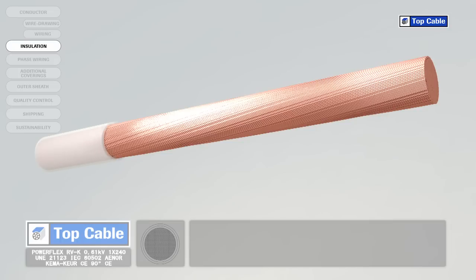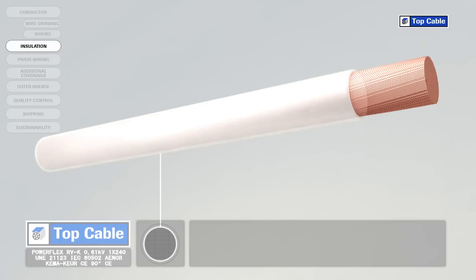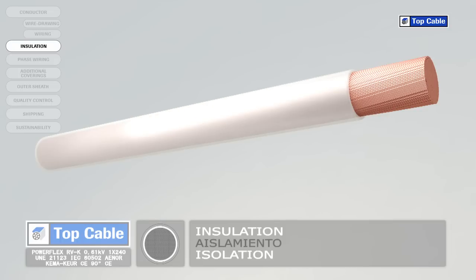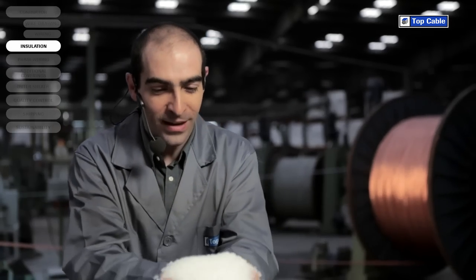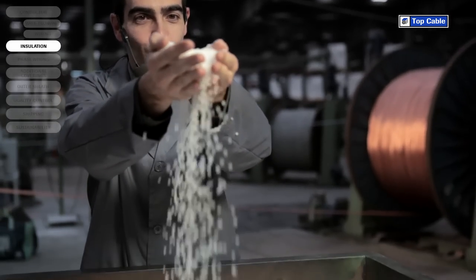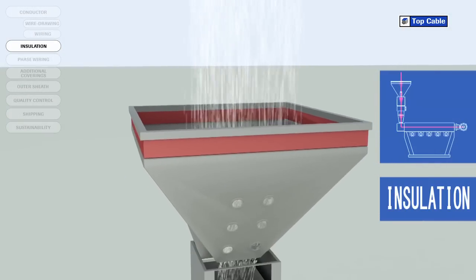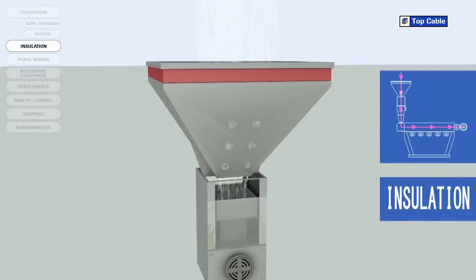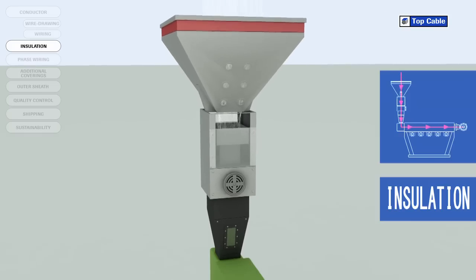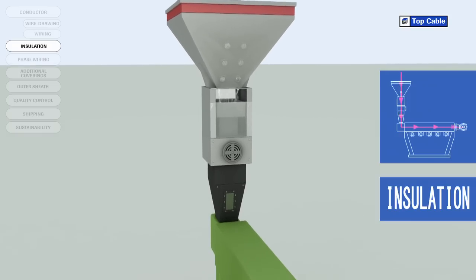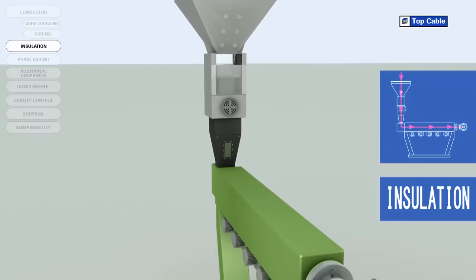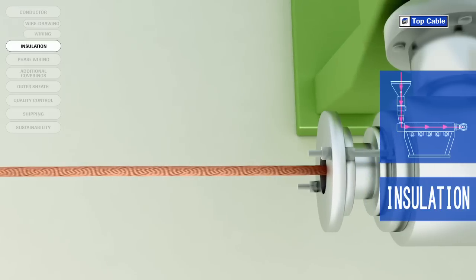The next process in the manufacture of electrical cables is the insulation. This is when we place an insulating cover over the conductor to prevent current leakages. In this process, the insulating material is added by a process of extrusion at high temperature. The insulation ensures there are no current leakages. Several insulating materials may be used: PVC, EPR, XLPE, etc.